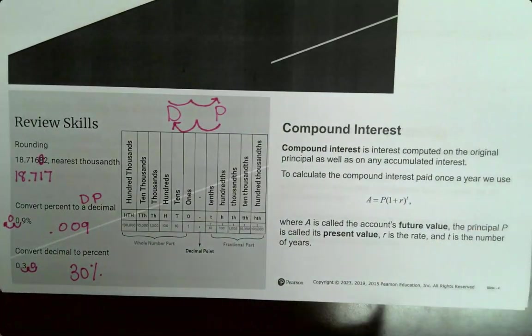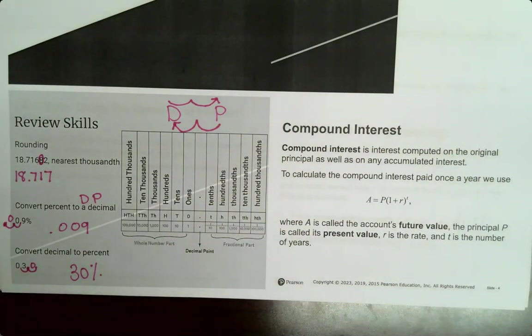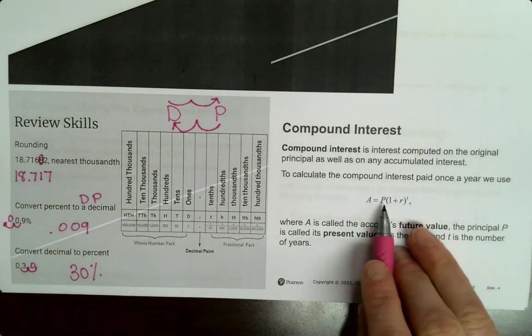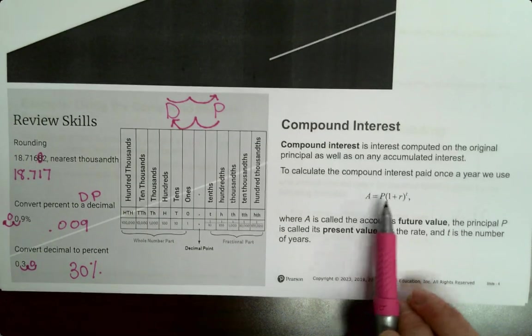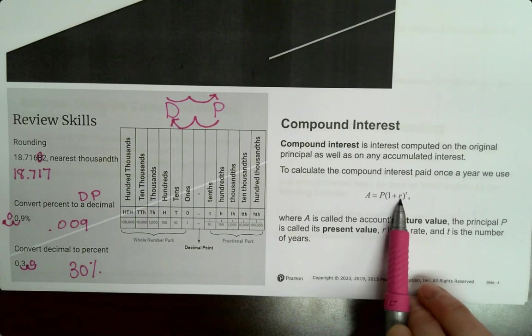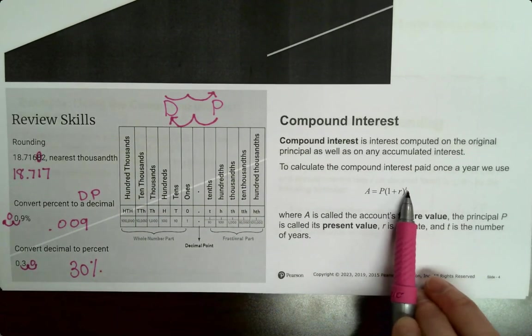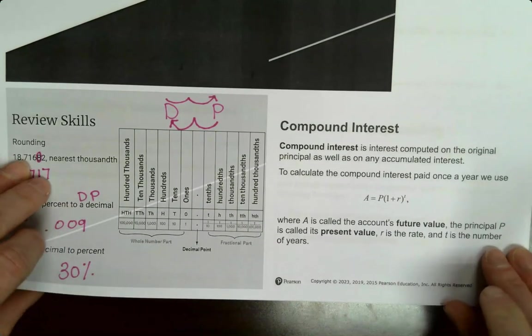Compound interest is interest computed on the original principal as well as any accumulated interest. To calculate the compound interest paid once a year, we use this formula. Where we have A is our future value, P is principal amount or present value, R is your rate as a decimal, and T is time in years.